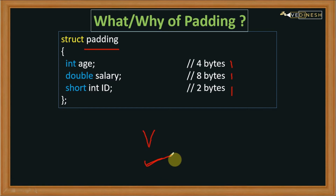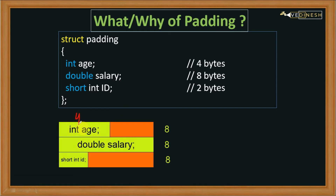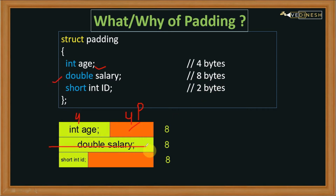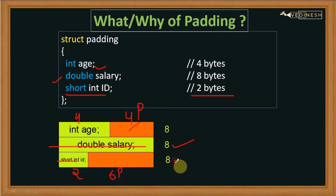Let's see how much memory this variable will actually take. First, four bytes are reserved by the age variable, and the remaining four bytes are used for padding. After that, double salary will take eight bytes of memory. After that, short int will take two bytes of memory, and six bytes are added for padding. So the total memory occupied by this variable would be eight plus eight plus eight, that is 24 bytes.